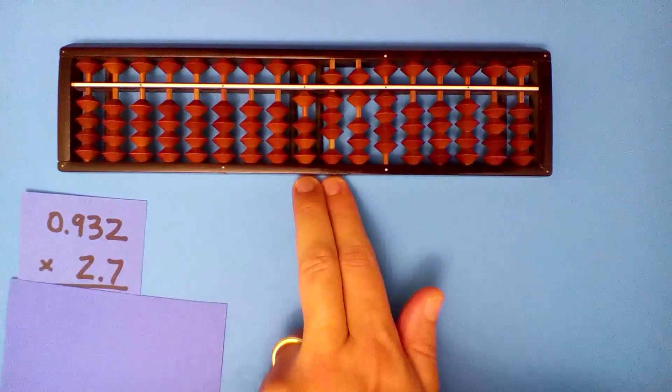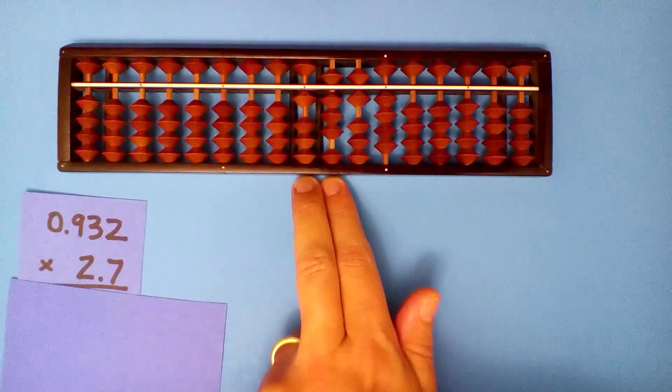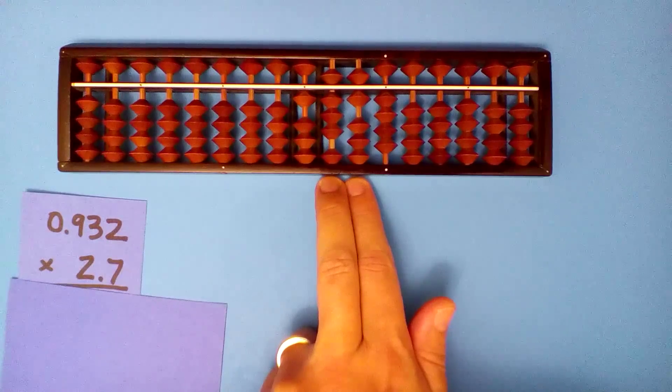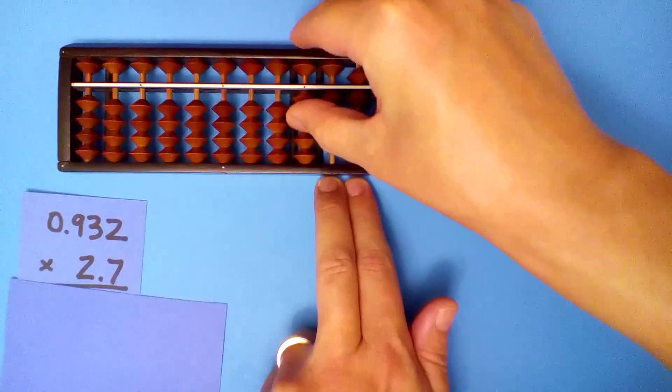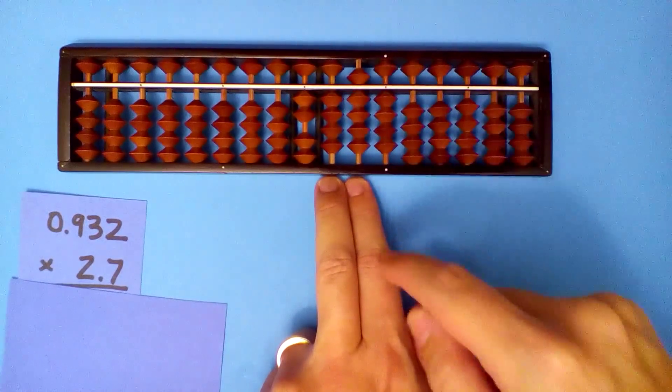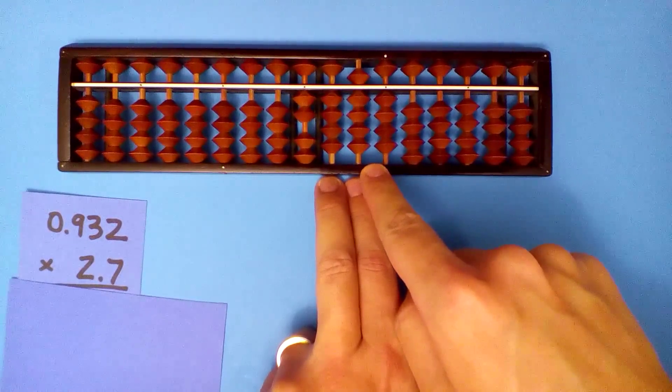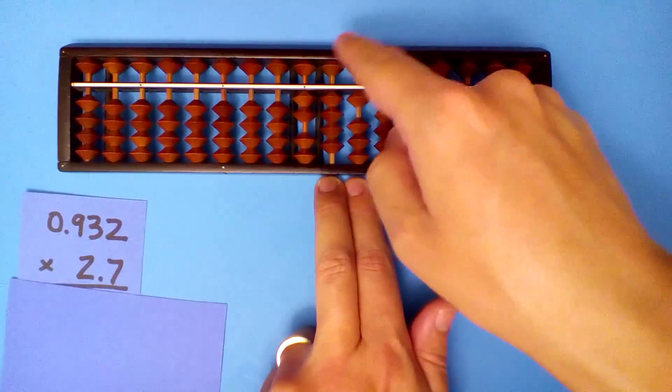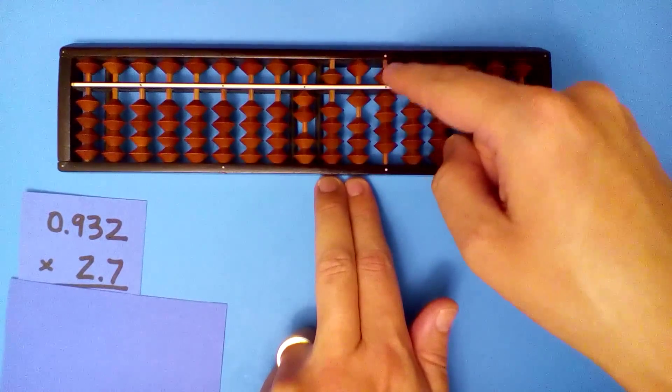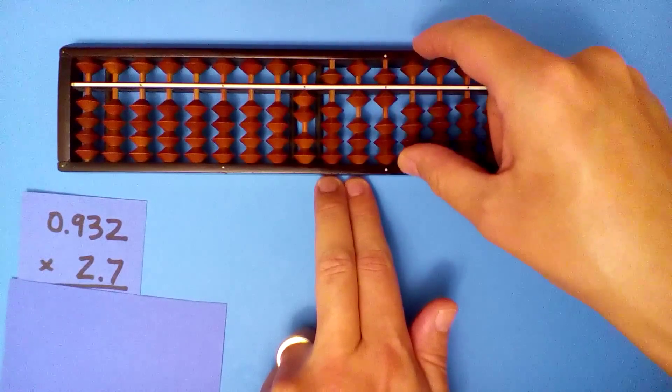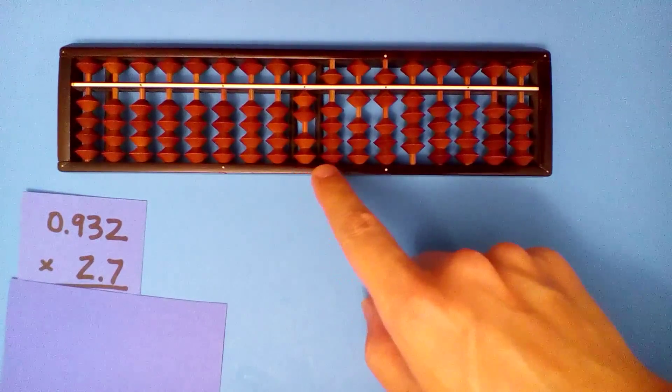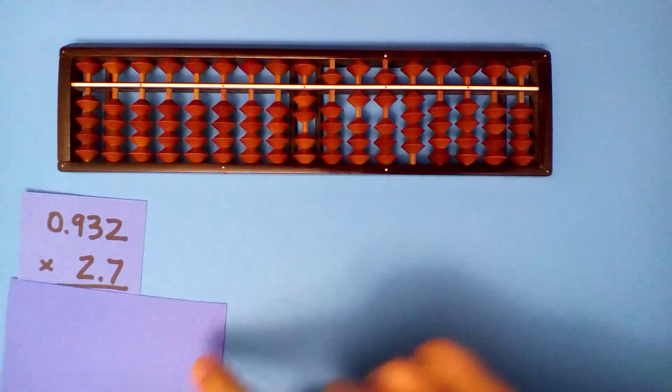Now we'll use the seven, but we'll go one to the right and start here instead. Seven times nine, sixty-three. Seven times three, twenty-one. Seven times two, fourteen. Our answer is 2.5164.